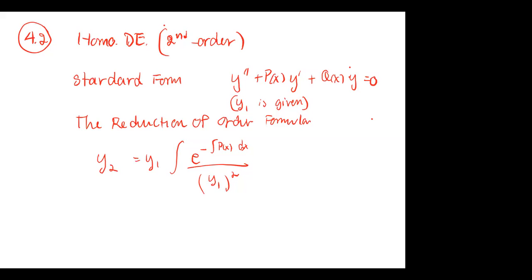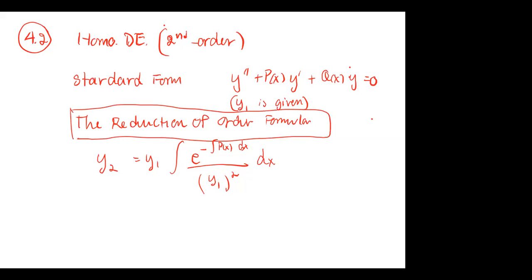What you have to work out is just the anti-derivative a couple of times, depending on the technique you use for these problems. This is the reduction of order formula for the homogeneous case — it is the byproduct of the entire process of the method of reduction of order. The name comes from reducing the order from two to one.